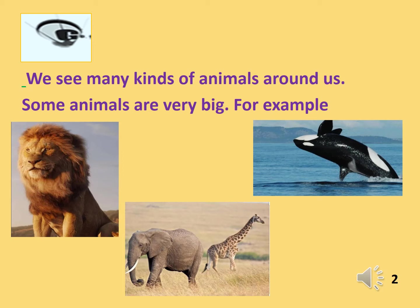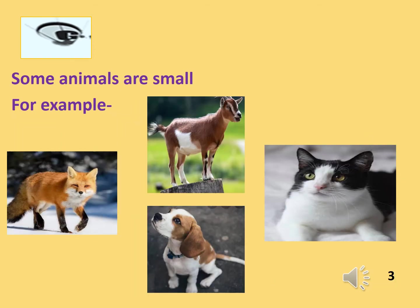Do you know, kids, that lion is also known as king of the jungle, and giraffe is the tallest animal on land. Whereas elephant is the largest animal on land, and a whale is the largest animal on the earth. So kids, now you can imagine how big these animals are.